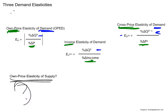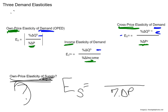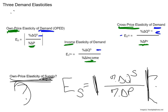The own price elasticity of supply — this is the notation we'll use. Since it's an own price elasticity, the denominator is going to be the change in price. But since it's supply rather than demand, the numerator is the percent change in quantity supplied. A good question to consider: should there be an absolute value, or not? Think about what we know about supply curves.